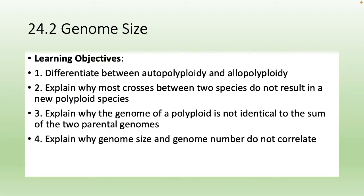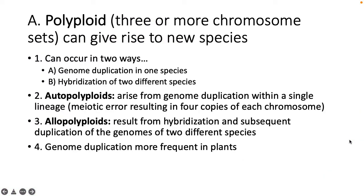Moving on to genome size. I'm going to talk about auto-polyploidy and allo-polyploidy. Polyploidy means you have three or more chromosome sets and they can give rise to new species. There are two ways a polyploid organism can occur: genome duplication in one species, or hybridization of two different species. Auto-polyploidy arises from genome duplication within a single lineage, brought about by meiotic error — during meiosis, the homologous chromosomes don't separate correctly.